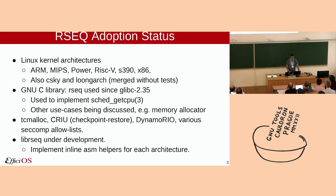I've asked the SeaSky maintainer to either provide tests or revert RSEC support on their architecture. I prefer to have an architecture not supporting RSEC than claiming to support it without tests. On the GNU C library side, it's been used since glibc 2.35, used to implement getCPU, and I want to discuss other use cases.